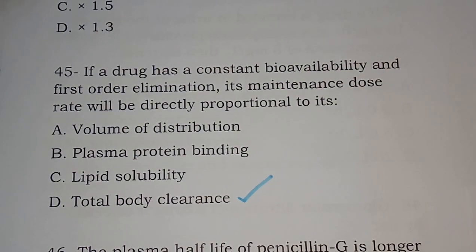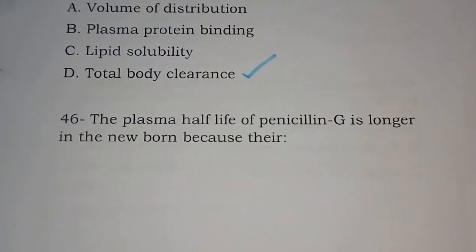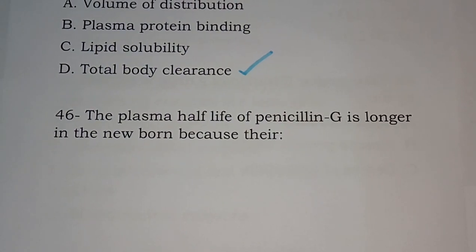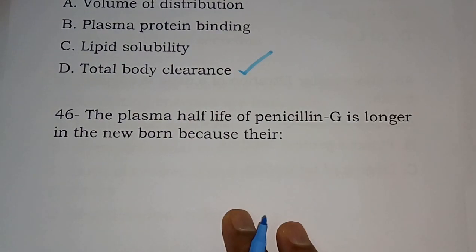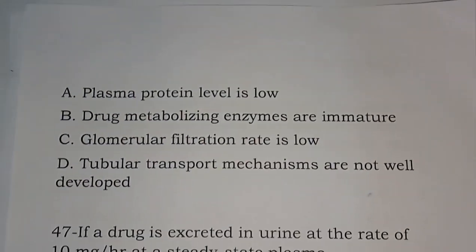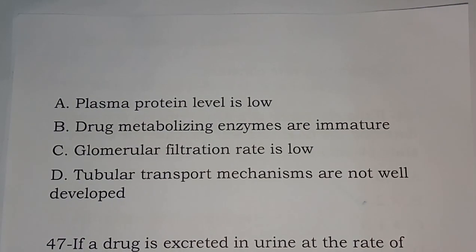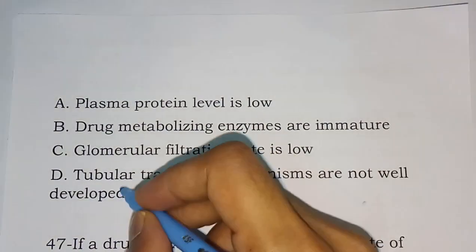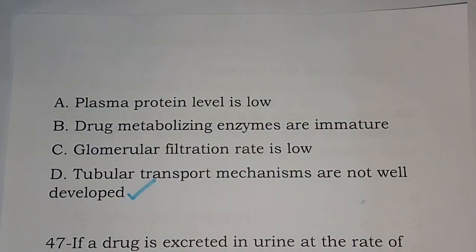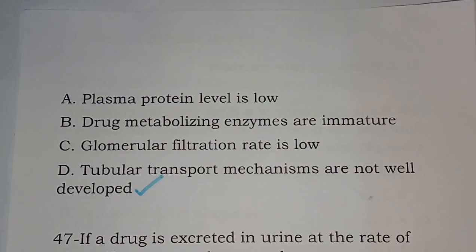Question 46: The plasma half-life of penicillin G is longer in the newborn because of which reason? Options: plasma protein level is low, drug metabolizing enzymes are immature, glomerular filtration rate is low, tubular transport mechanisms are not well developed. The correct answer is option D, tubular transport mechanisms are not well developed, meaning elimination will be less.